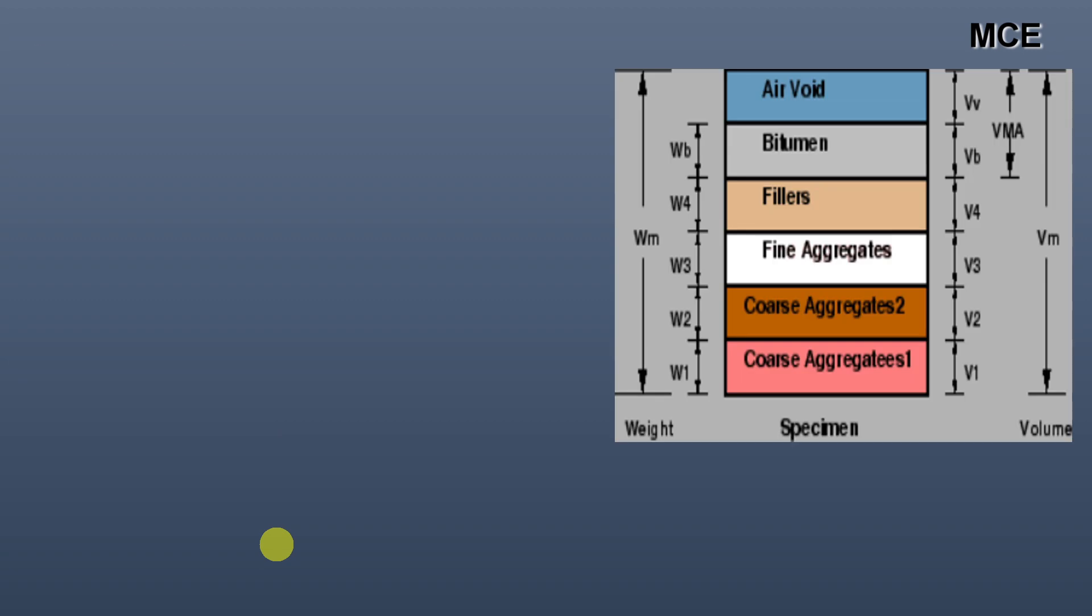The next step will be to find the percent of air voids by volume in the mix. This is simply given by Gt minus Gm divided by Gt into 100, where Gt is the theoretical specific gravity and Gm is the bulk specific gravity. Putting values we get V equals 2.406 minus 2.316 divided by 2.406 into 100, which equals 3.74%. This is the volume of the air voids.